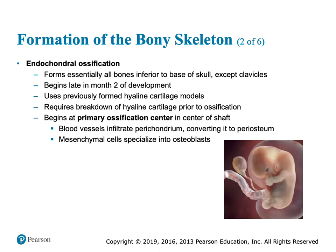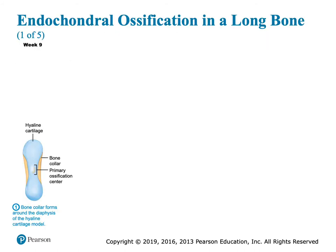Some osteoblasts come in and get the ball rolling by secreting osteoid, and that osteoid is going to harden. Mesenchyme — embryonal connective tissue — is going to directly become osteoblasts. A blood vessel is going to meet up in the center of that hyaline cartilage structure and start the tiniest amount of bone, creating a collar of bone around that hyaline cartilage.